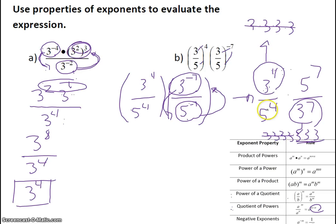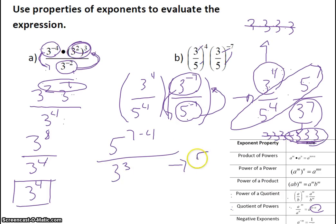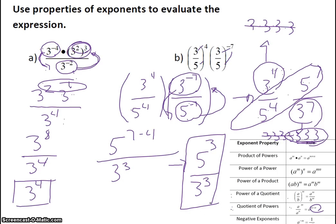Likewise, my 5 to the 4th and my 5 to the 7th — using my quotient rules, I'm going to subtract my exponents. So I have 5 to the 7 minus 4, which gives me 5 cubed. So then I have 3 cubed on the bottom and 5 cubed on the top. So it ends up being 5 cubed over 3 cubed, and that would be simplified — which if you wanted to evaluate all the way out, it would be 125 over 9.